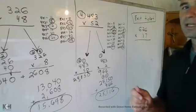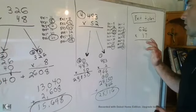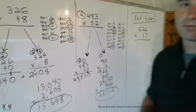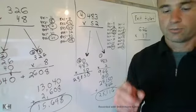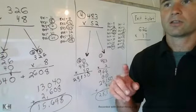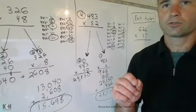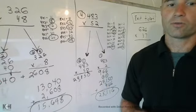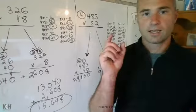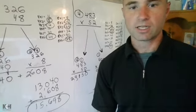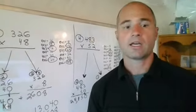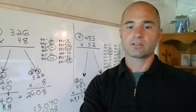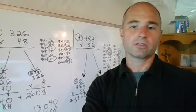Now, with that being said, go ahead and solve the exit ticket question of 626 times 37 in your packet. Then you'll go to Google Classroom and click on Day 3's exit ticket, which is in the Google form, and submit your answer. Thank you very much for your wonderful participation today and for the whole week. And we will see you back here next week. Have a great rest of your day and your great rest of your weekend.